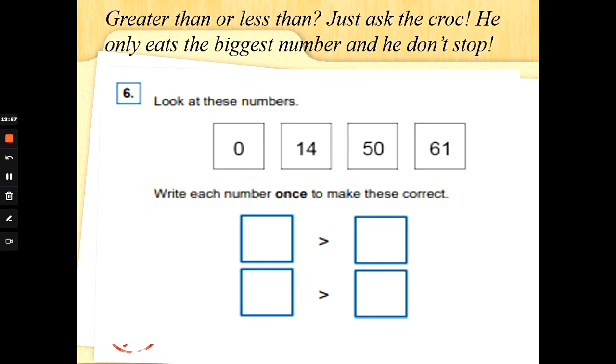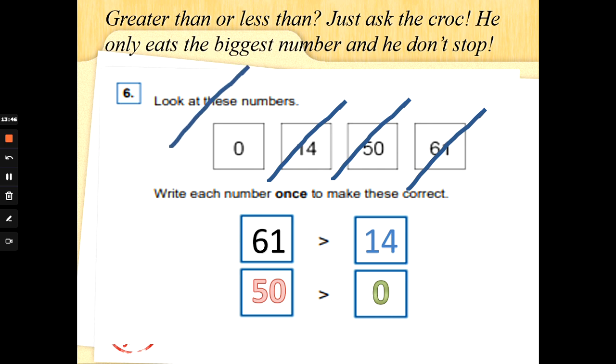Last question for today. Using the greater than or less than. Greater than or less than, just ask the croc. He only eats the biggest number and he don't stop. Number six, look at these numbers: zero, fourteen, fifty, sixty-one. Write each number once to make these correct. Now all you need to do is pick one of the biggest numbers and put it in the box here, because his mouth is facing that way. So I've chosen sixty-one. Then I just need a number smaller than sixty-one. So I'm going to cross out sixty-one because I'm only allowed to use it once. Then I'm just going to pick a number that is smaller than sixty-one. So I've chosen fourteen. Cross that one out. And then I need to choose the biggest number out of the cards that I've got left. Well, fifty is the biggest number. Cross that one out. And then the last number is the number I haven't used yet, and that is zero. And I would get a tick for all those work.